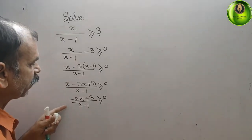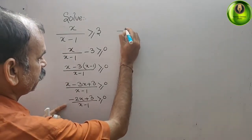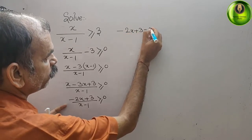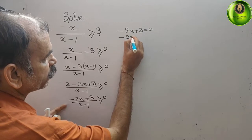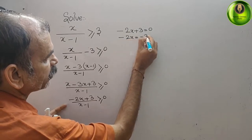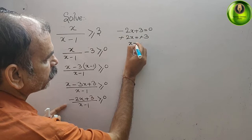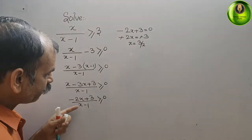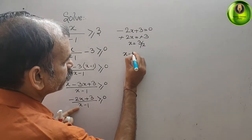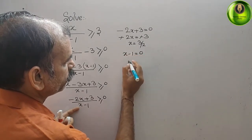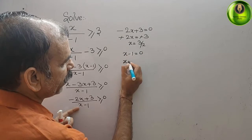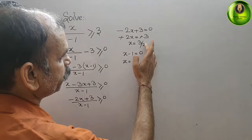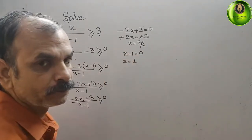For the numerator: -2x + 3 = 0, so -2x = -3, giving x = 3/2. For the denominator: x - 1 = 0, giving x = 1. So the two critical values of x are 3/2 and 1.